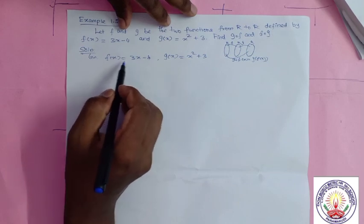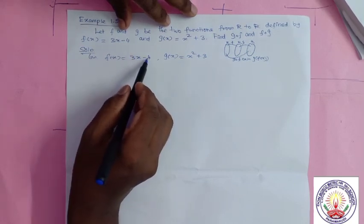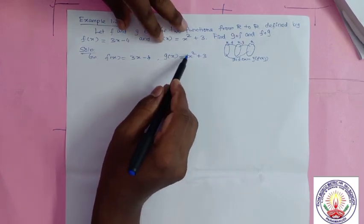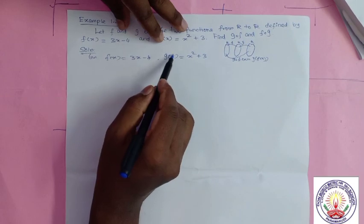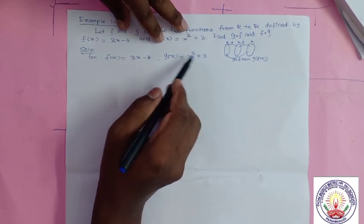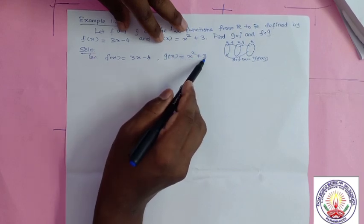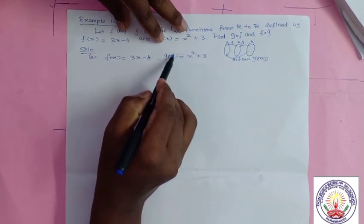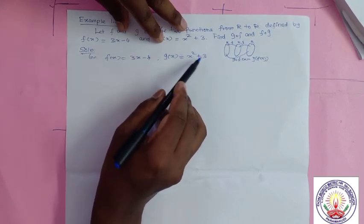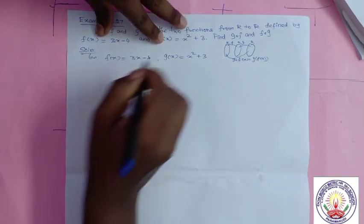That means f will first multiply by 3 then subtract 4. Similarly, g — whatever you give, g will square it then add 3. If you give x, it becomes x² then add 3. If you give a, it becomes a² then add 3. So whatever you give, g will square then add 3.